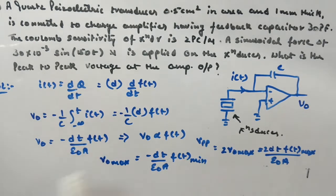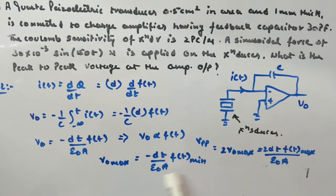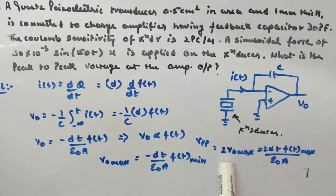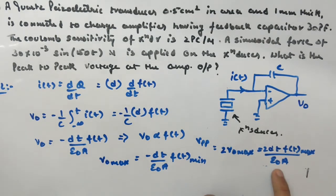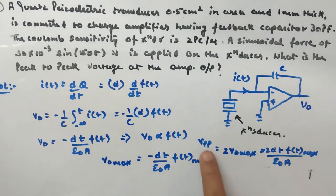V₀ is proportional to F(t) since everything else is constant. For the peak-to-peak value, we need the maximum output. Because of the negative sign, maximum output occurs at maximum F(t). Removing the minus sign and writing maximum, V₀_max = d·t·F(t)_max / ε₀A. For peak-to-peak value, multiply by 2: V_p-p = 2 × d·t·F(t)_max / ε₀A.